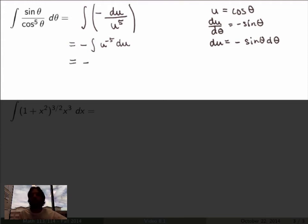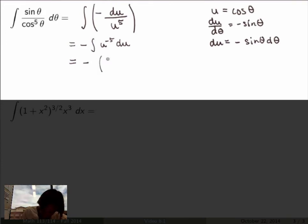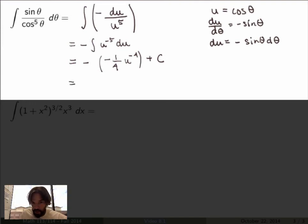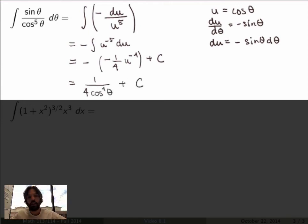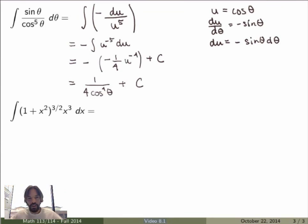Integrating u to the minus five gives u to the minus four times negative one-fourth plus a constant. I simplify the minus signs and rewrite in terms of the original variable, getting one over four cosine to the fourth power theta plus C.